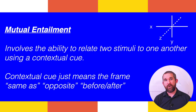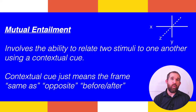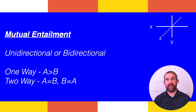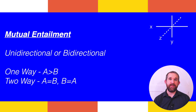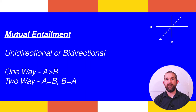Mutual entailment is a core feature of relational framing and involves the ability to relate two stimuli to one another using a contextual cue — just meaning a frame like 'same as,' 'opposite,' 'before and after,' and so forth. These relational frames can go one way or both ways: 'Mary is taller than Martha,' and also 'Martha is shorter than Mary.' Mutual entailment relates two things together and creates a relationship of meaning between them. This simple building block is arguably the first step toward more complex learning.